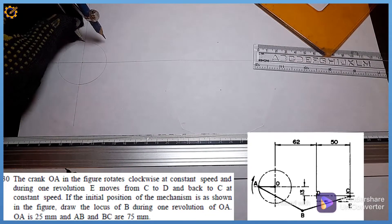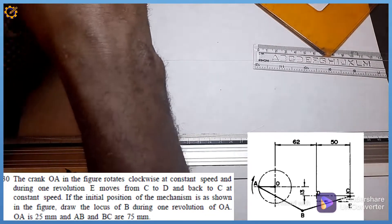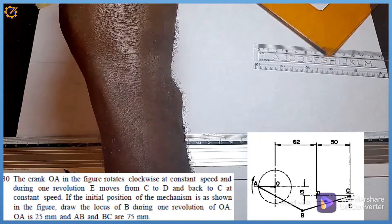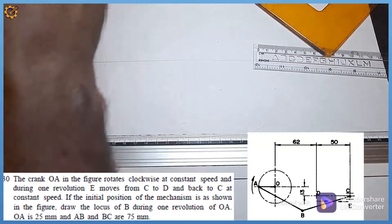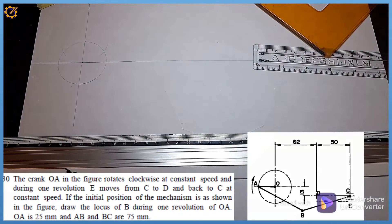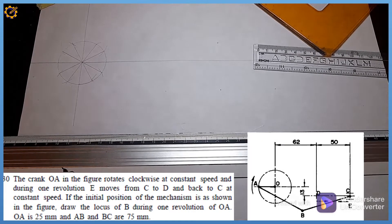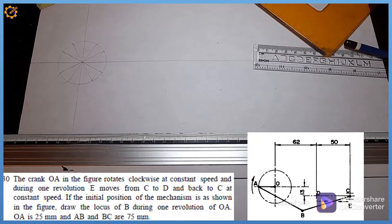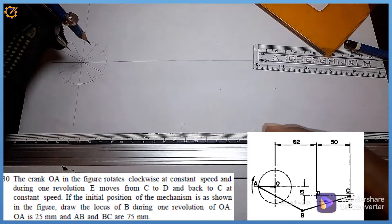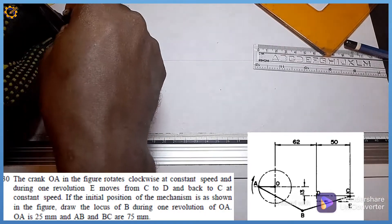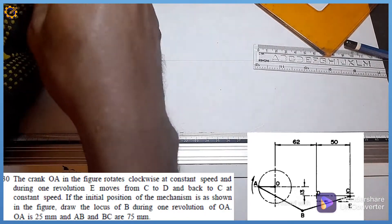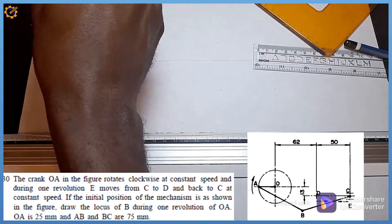Before I proceed, I'm going to divide this circle into 12 equal parts. To learn how to divide a circle into 12 equal parts, you can visit our YouTube channel at Michael Tech. The next thing is the direction of the arrow — we are told it rotates clockwise, so from the midpoint I show the clockwise direction.